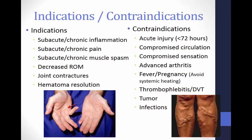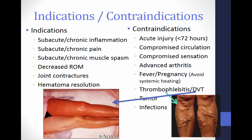The indications for thermotherapy include subacute or chronic inflammation, subacute or chronic pain, subacute or chronic muscle spasm, decreased range of motion, joint contractures, and hematoma resolution. The contraindications for thermotherapy include acute injury less than 72 hours old, compromised circulation, compromised sensation, advanced arthritis, fever and pregnancy — we want to avoid systemic heating — thrombophlebitis, DVT, tumors, and infections.